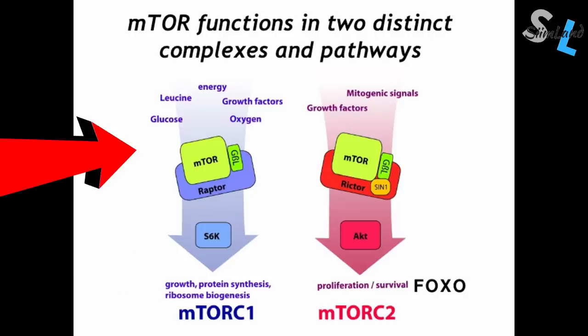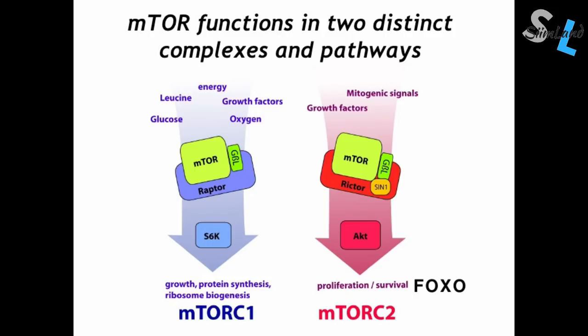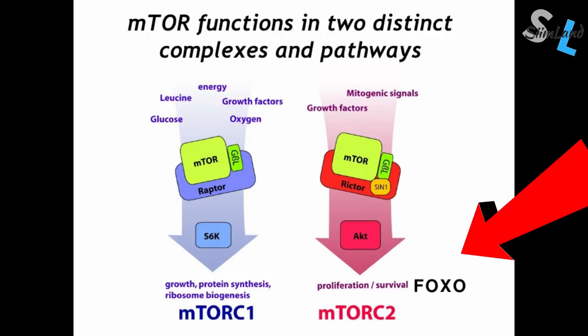mTOR-C1 is regulated by insulin, growth factors, amino acids, mechanical stimuli, oxidative stress, oxygen levels, presence of energy molecules like ATP, phosphatidic acid, and glucose. It's a key factor in skeletal muscle protein synthesis. mTOR-C2 functions regulate the actin cytoskeleton, which is a network of long chains of proteins in the cytoplasm of eukaryotic cells. Basically, mTOR functions like an anabolic switch that turns on cellular growth throughout the entire body.